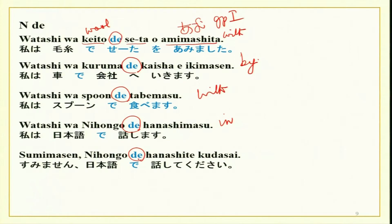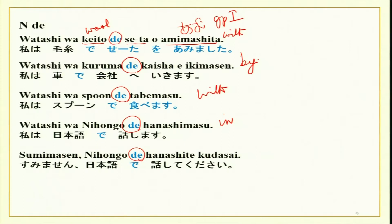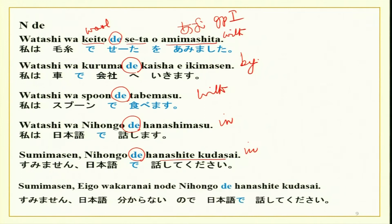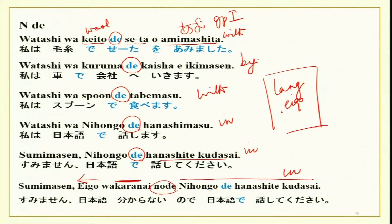Sumimasen, nihongo de hanashite kudasai — please talk in Japanese. Or: sumimasen, eigo wakaranai no de — I do not understand English — therefore nihongo de hanashite kudasai — please talk in Japanese. You will see that with any language — eigo, nihongo, hindi, or any other language — 'de' is always used, meaning 'in.'